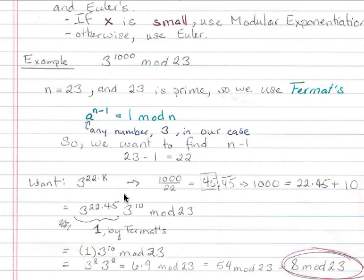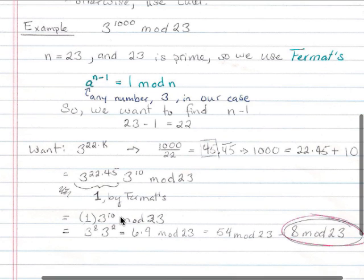So essentially what I have here, I've just rewritten this right here from the beginning as this. Now the reason I did that is because 3 to the 22nd power is 1. If I do it 45 times, it's still 1 by Fermat's theorem. So I just rewrote this, as you should be able to figure out by basic exponent rules.